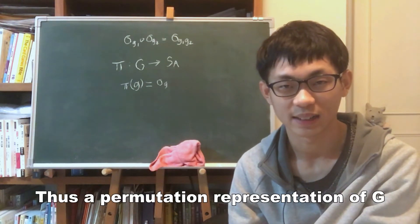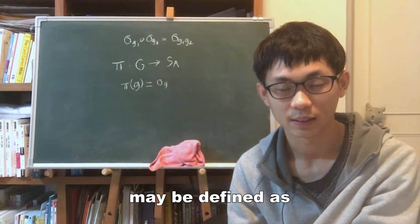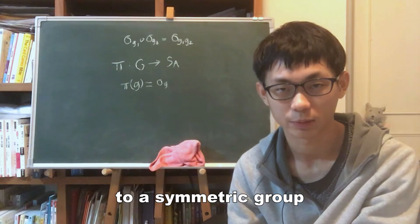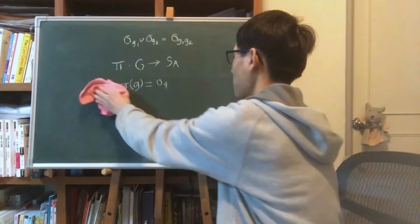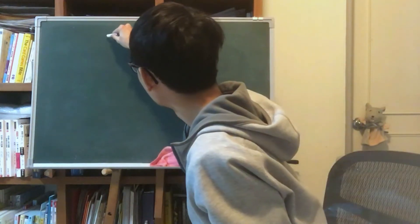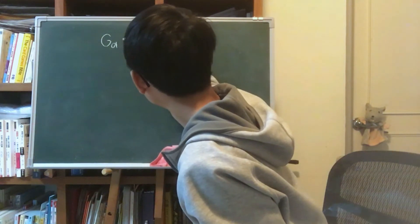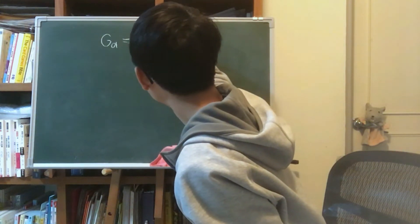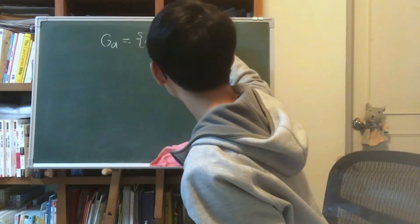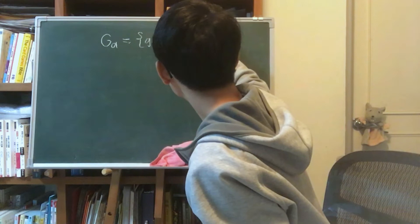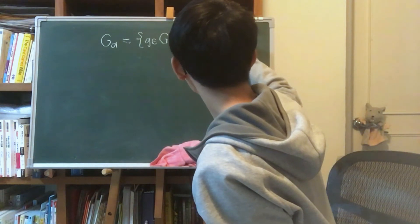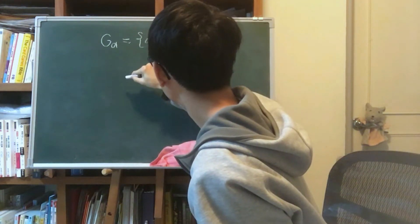Thus, a permutation representation of G may be defined as any homomorphism from G to a symmetric group.